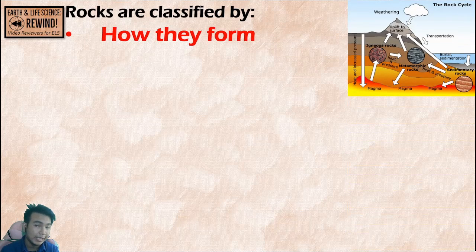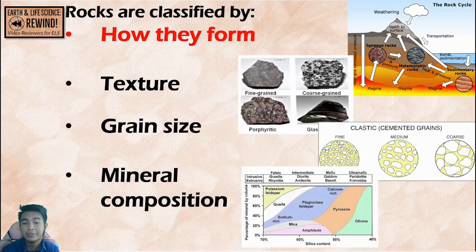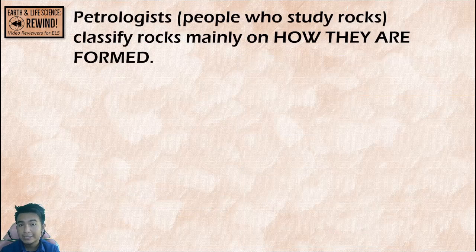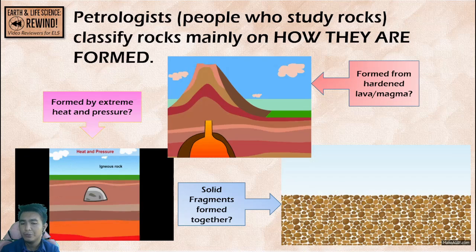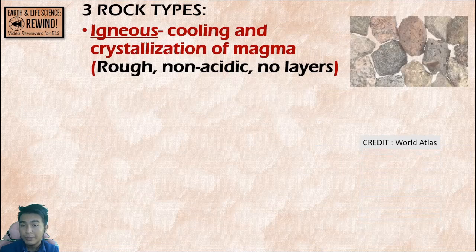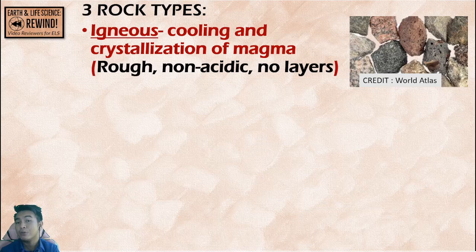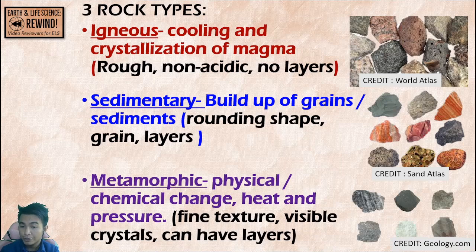Rocks are generally classified by how they form — from molten lava, through heat and pressure, or compacted in bodies of water — as well as by texture, grain size, and mineral composition. But petrologists unanimously agree to classify rocks by how they are formed. With that, we have three groups: igneous rocks, products of magma and lava being cooled and crystallized; sedimentary rocks, built up of fragments, grains, and sediments; and metamorphic rocks, which are other rocks that underwent extreme heat and pressure — a literal metamorphosis, or change in form.